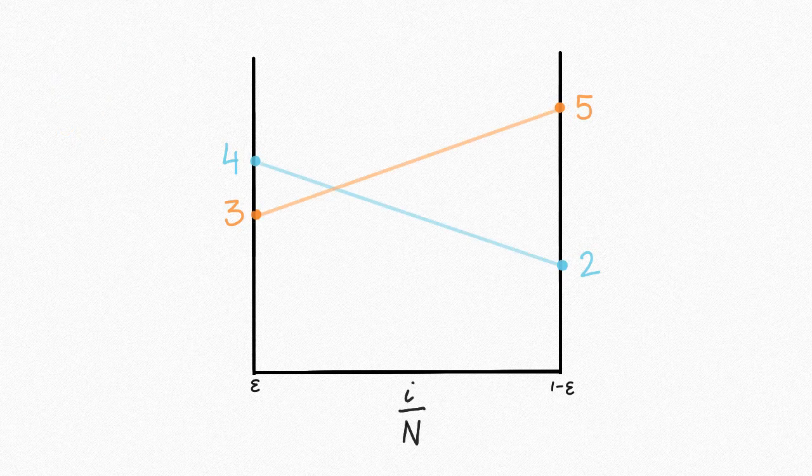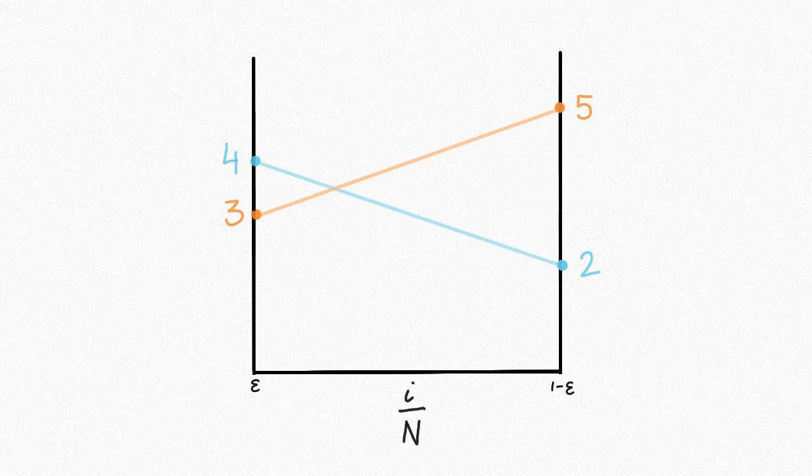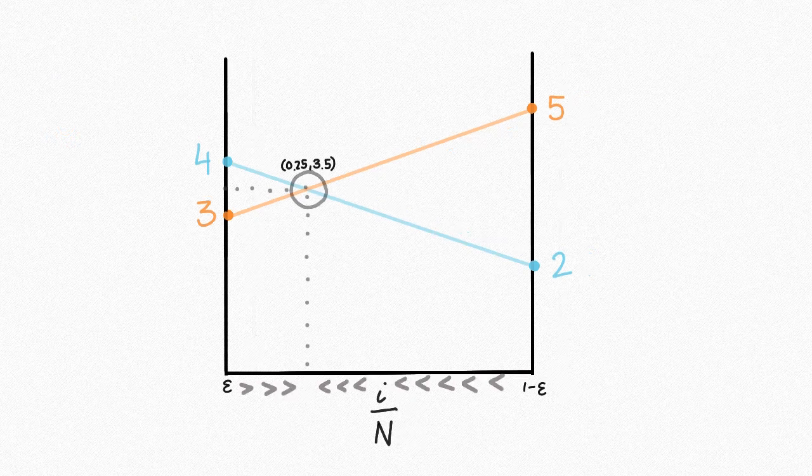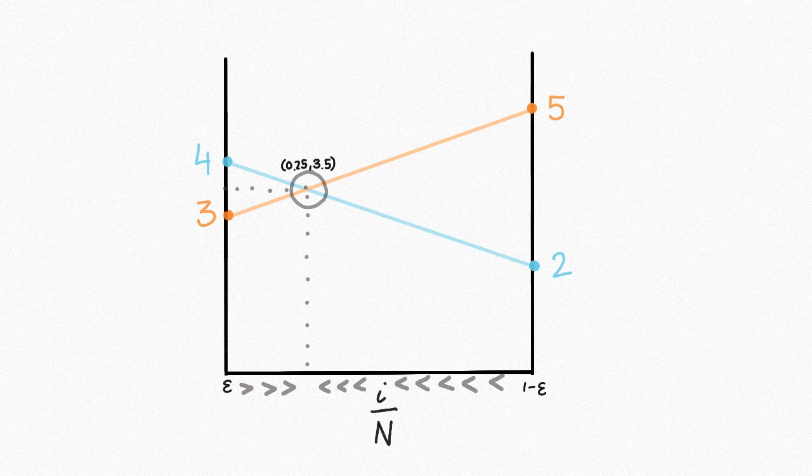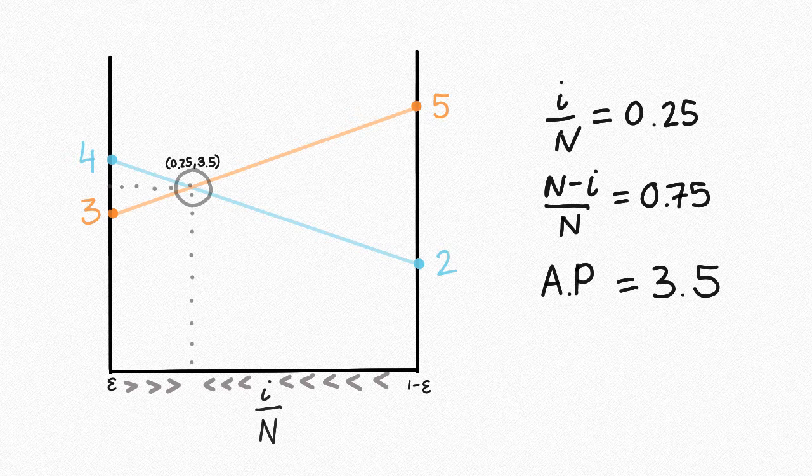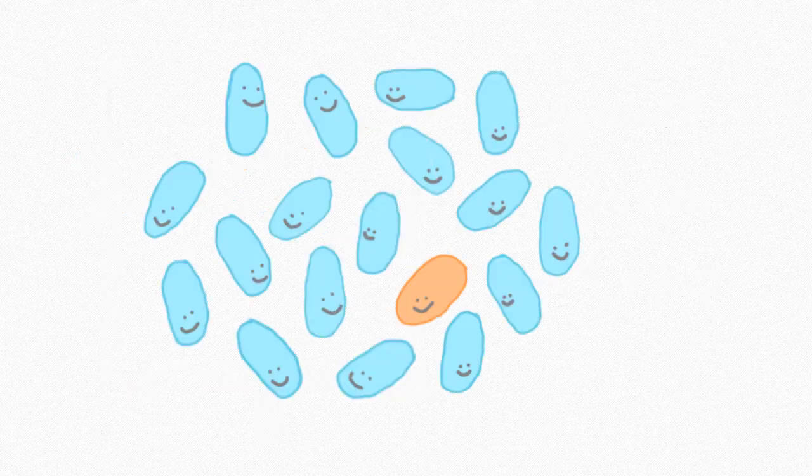If we connect each coloured dot together, we get a point of intersection, the point of equilibrium, which we call the evolutionarily stable strategy. The exact proportion we can find graphically, which would be 25% of population blue and 75% orange, where the average payoff would be 3.5 for both.